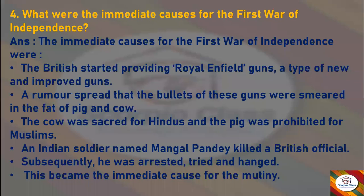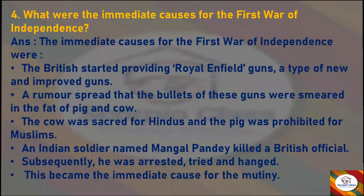Next question: What were the immediate causes for the First War of Independence? Answer: The British started providing Royal Enfield guns — a type of new and improved gun — and a rumor spread that the bullets were smeared in the fat of pig and cow, which was offensive to both Hindus and Muslims. An Indian soldier named Mangal Pande killed a British official; subsequently he was arrested, tried and hanged. This became the immediate cause for the mutiny.